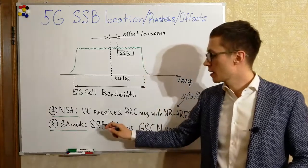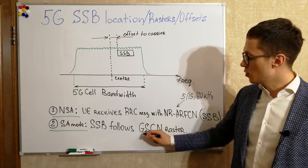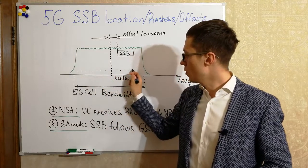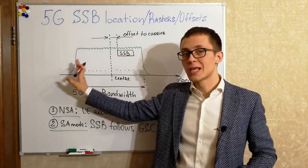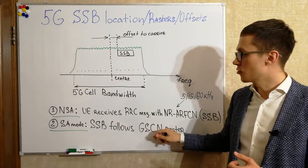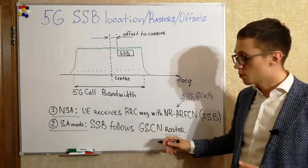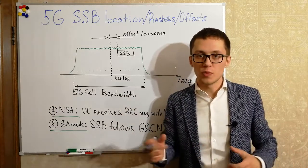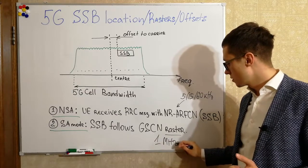For standalone mode, the SSB block follows a special Global Synchronization Channel Number raster. A raster means there are specific predetermined frequency locations, and the SSB always follows these special frequency positions. The user equipment must scan the full bandwidth with GSCN granularity in order to find and identify the SSB block. This method has much larger granularity — based on different formulas in 3GPP specifications, it can be around 1 megahertz.